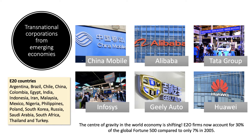We're now seeing lots of transnational corporations emerging from developing countries: China Mobile, Alibaba — the biggest global online retailer and the Amazon of China — the Tata Group, the Indian conglomerate which owns Jaguar Land Rover, Huawei Technologies — a massive competitor to Samsung and Apple — Geely Motors from China, which bought Swedish firm Volvo in 2010, and Infosys, one of the world's biggest information systems businesses employing nearly a quarter of a million people.